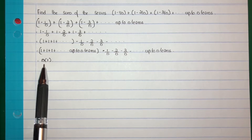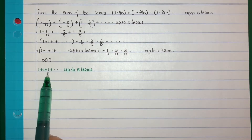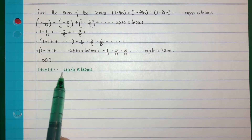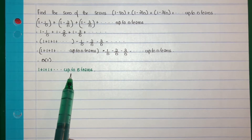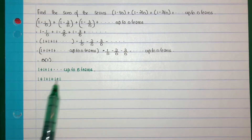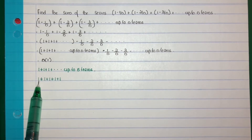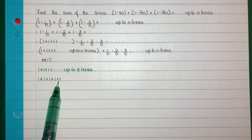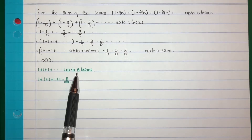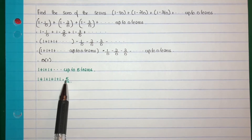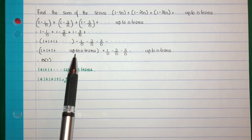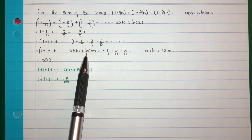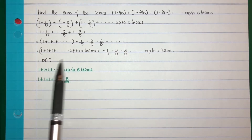This step can be confusing, so consider an example. 1 plus 1 plus 1 plus etc. up to 5 terms — that is 5 ones — so 1 plus 1 plus 1 plus 1 plus 1 equals 5, that is 5 into 1. Here we are up to n terms, so n into 1, that is n.